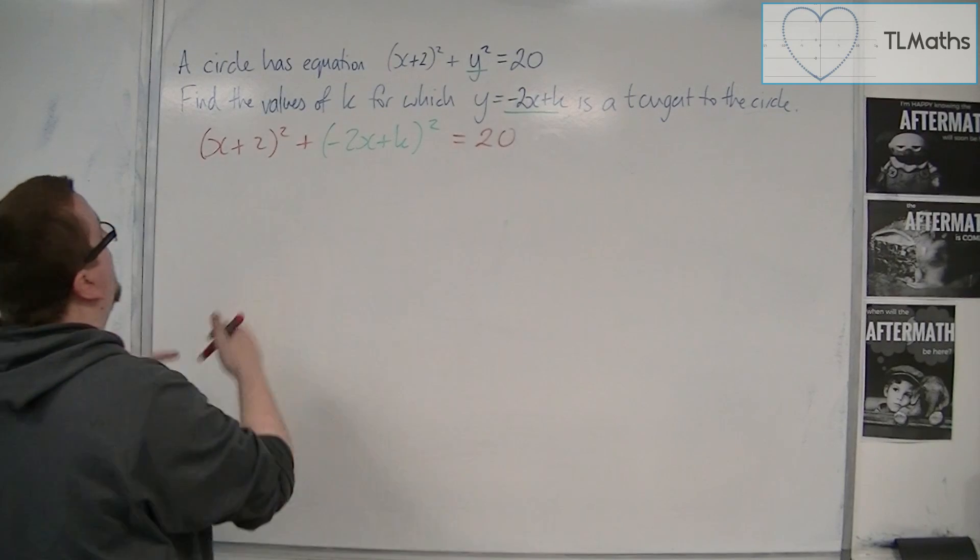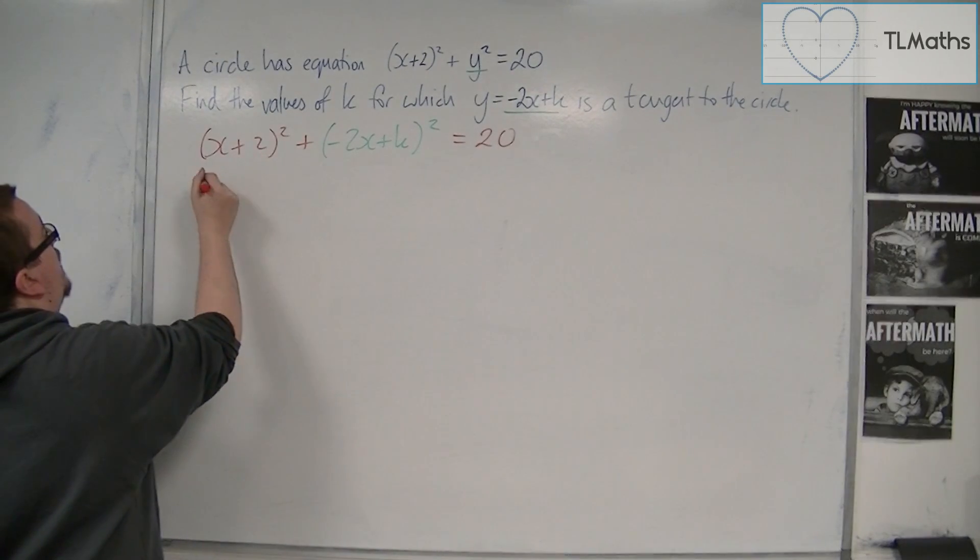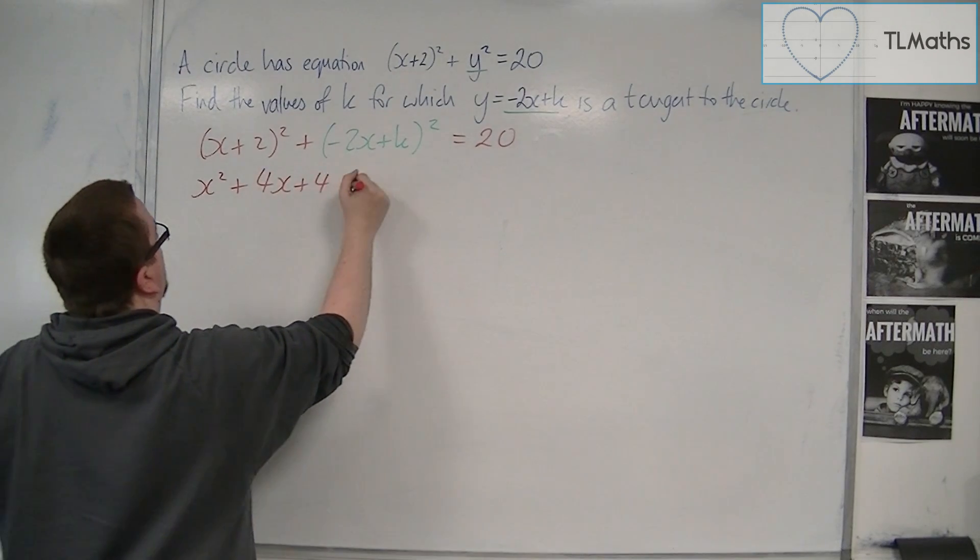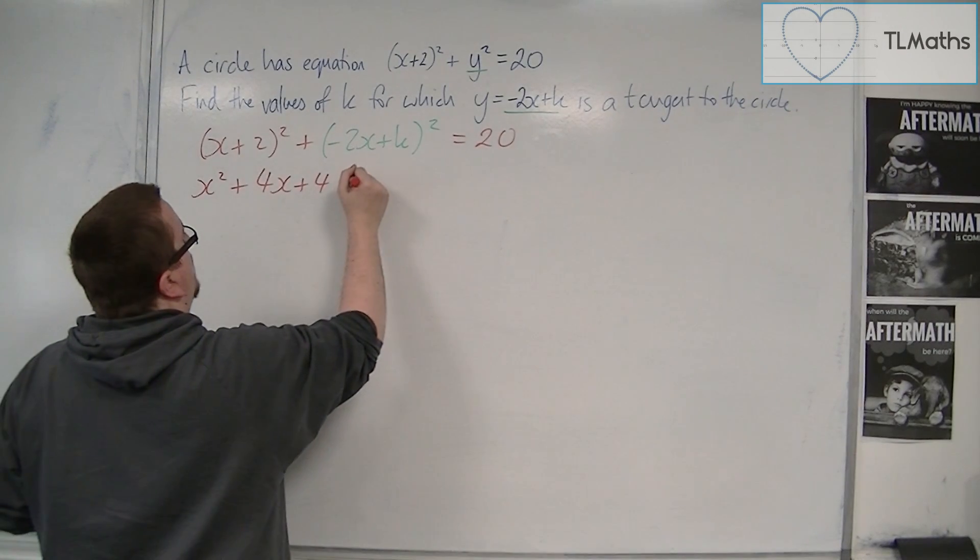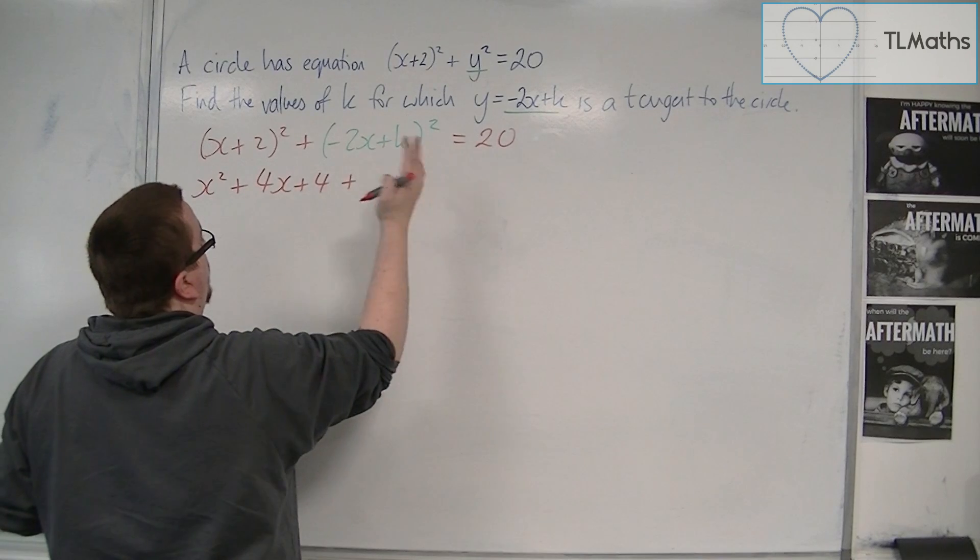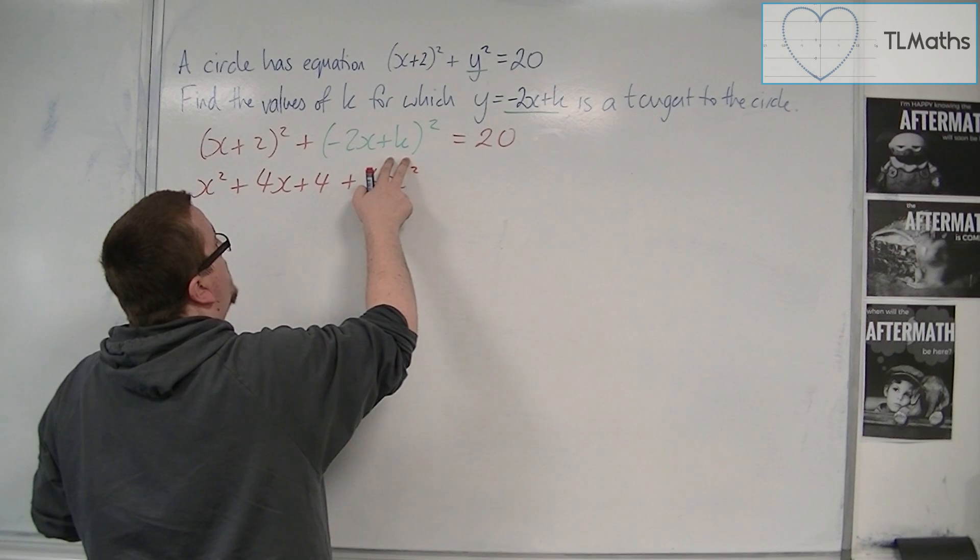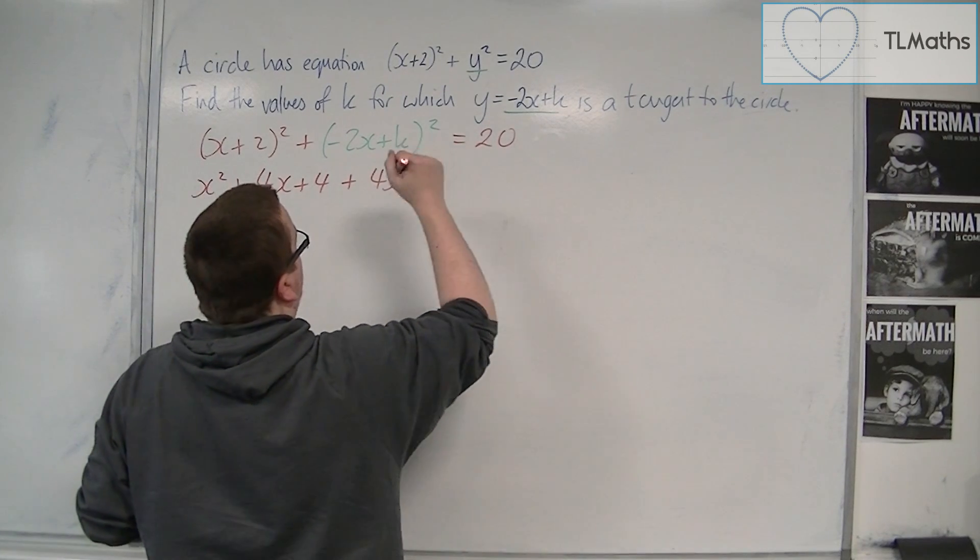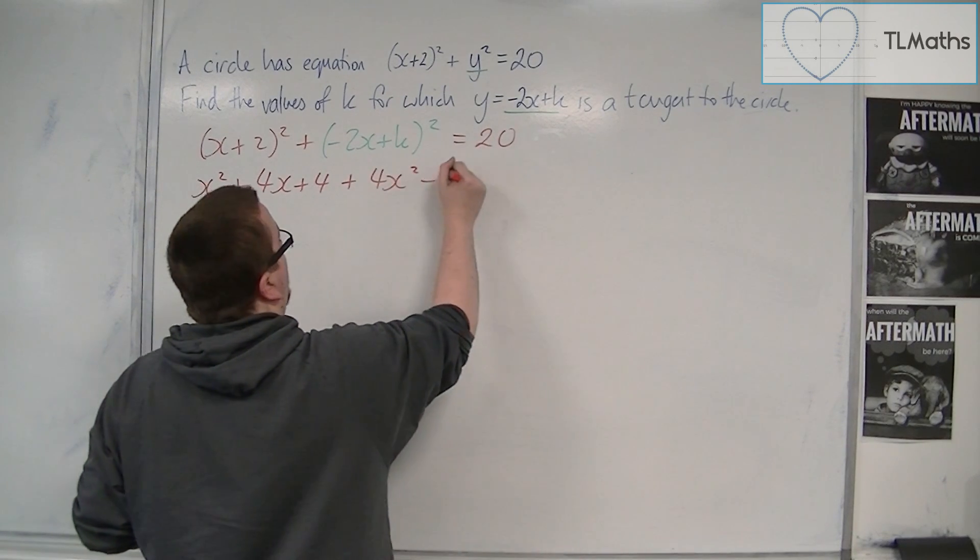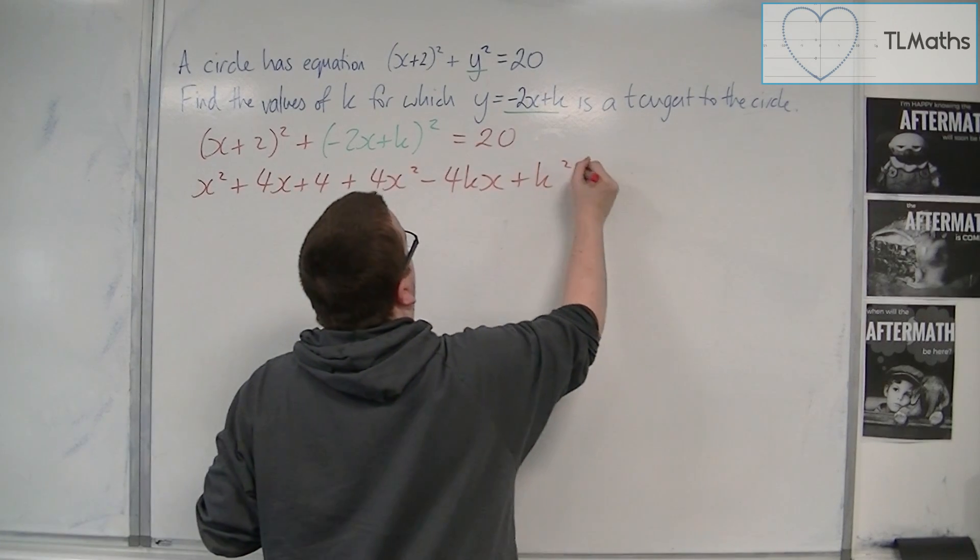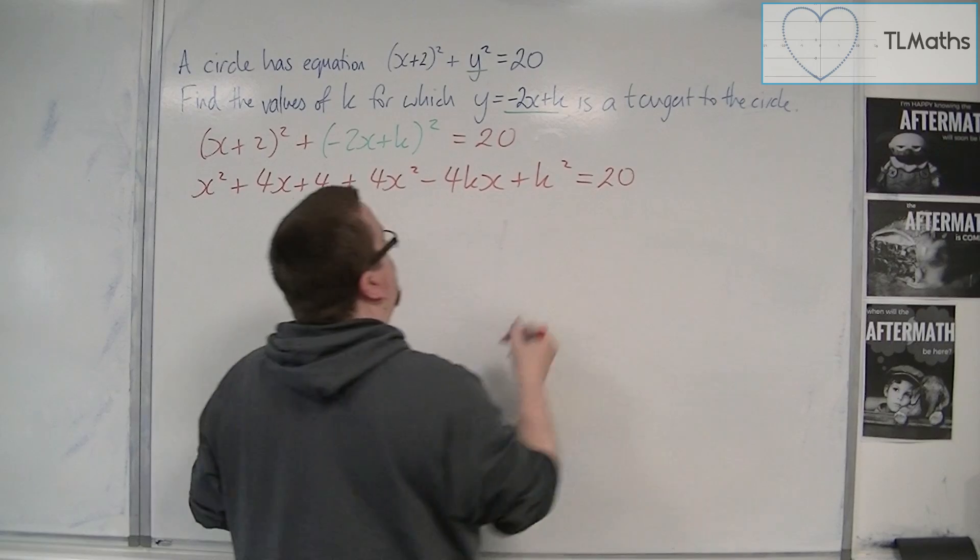We're now going to expand this out. So we're going to have x² + 4x + 4 - that's from the first bracket - plus (-2x)² is +4x². We're going to get -2x times k, so -2kx, but twice, so -4kx. And we're going to get a k², and we've got 20 on the right-hand side.